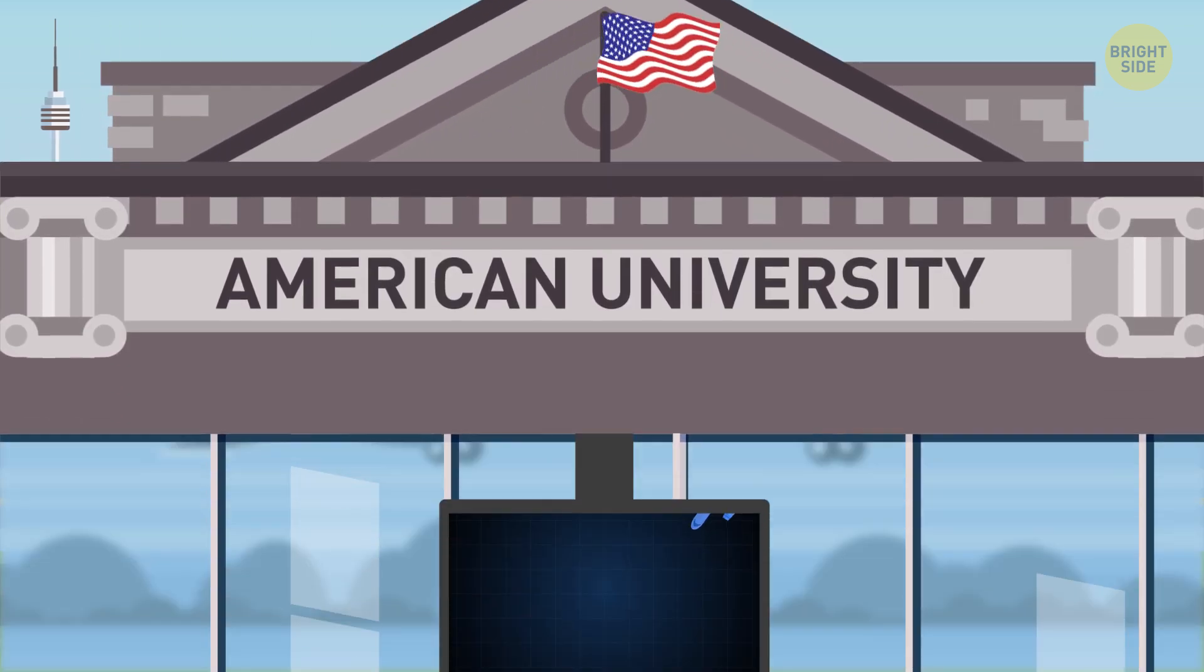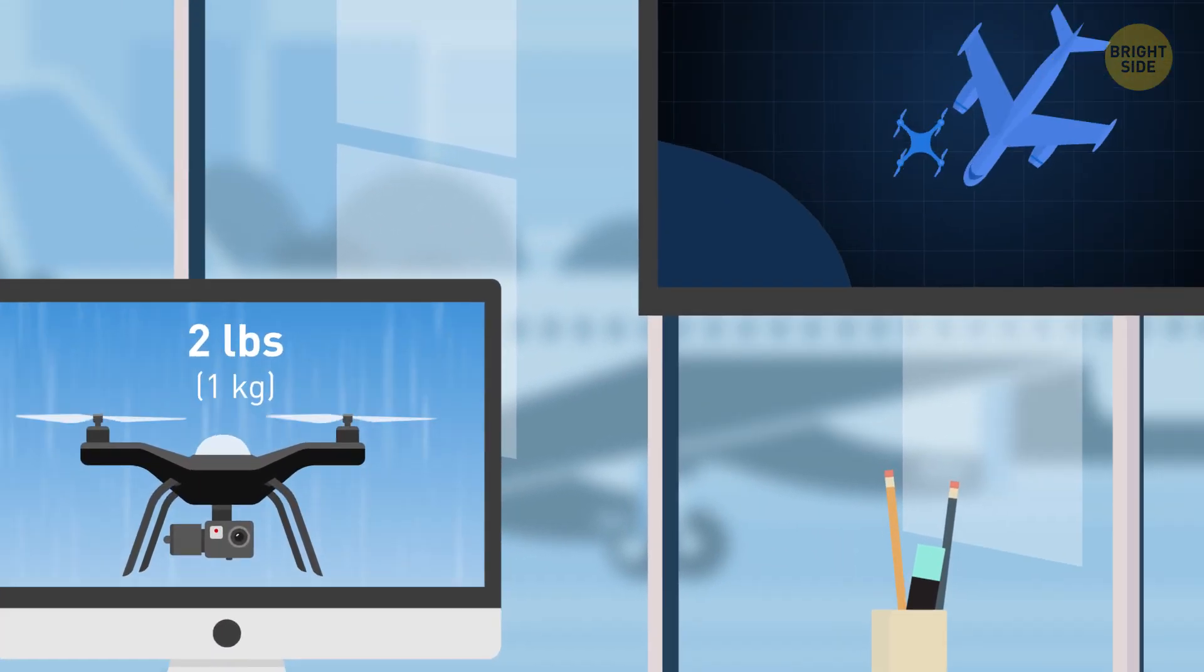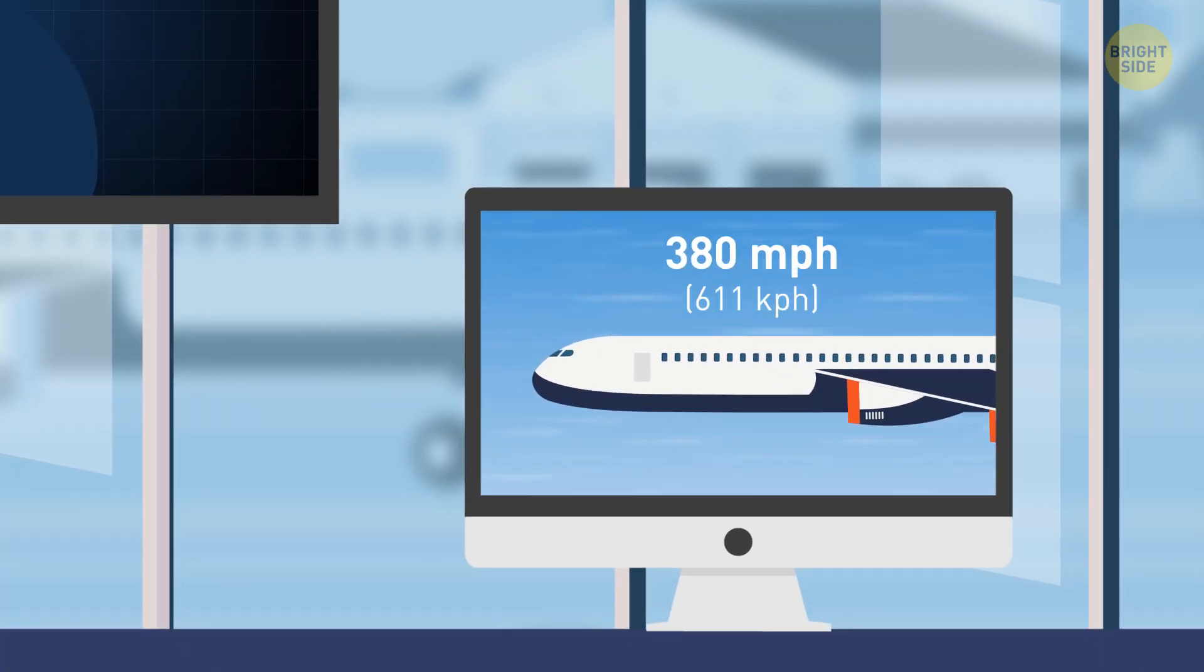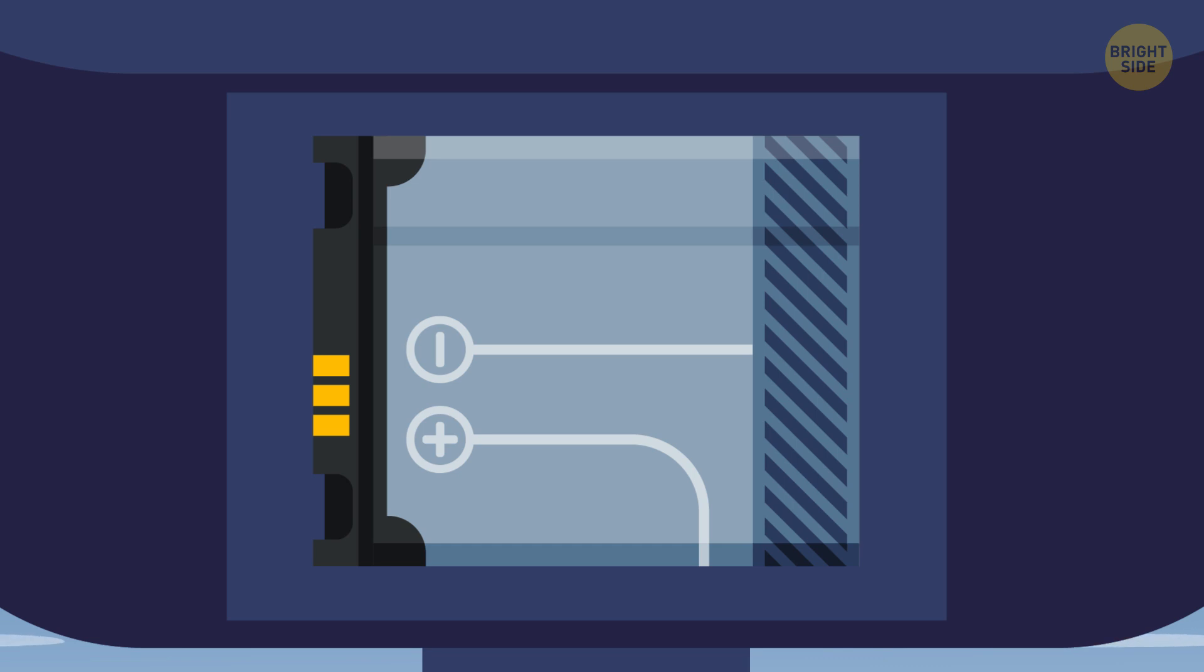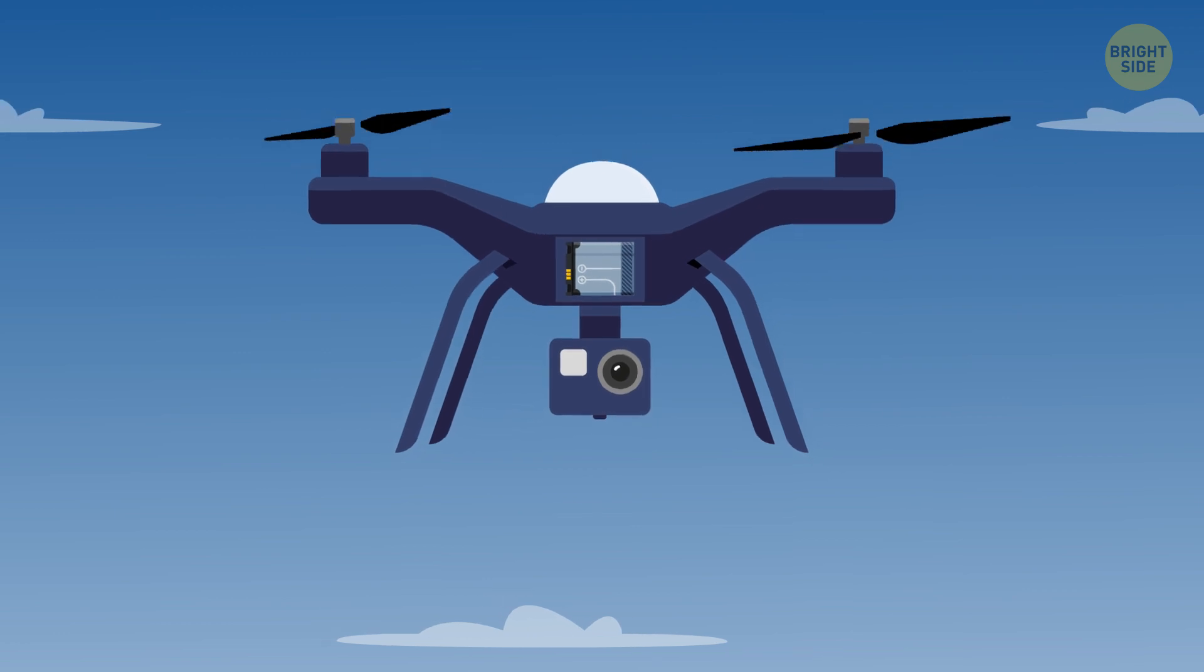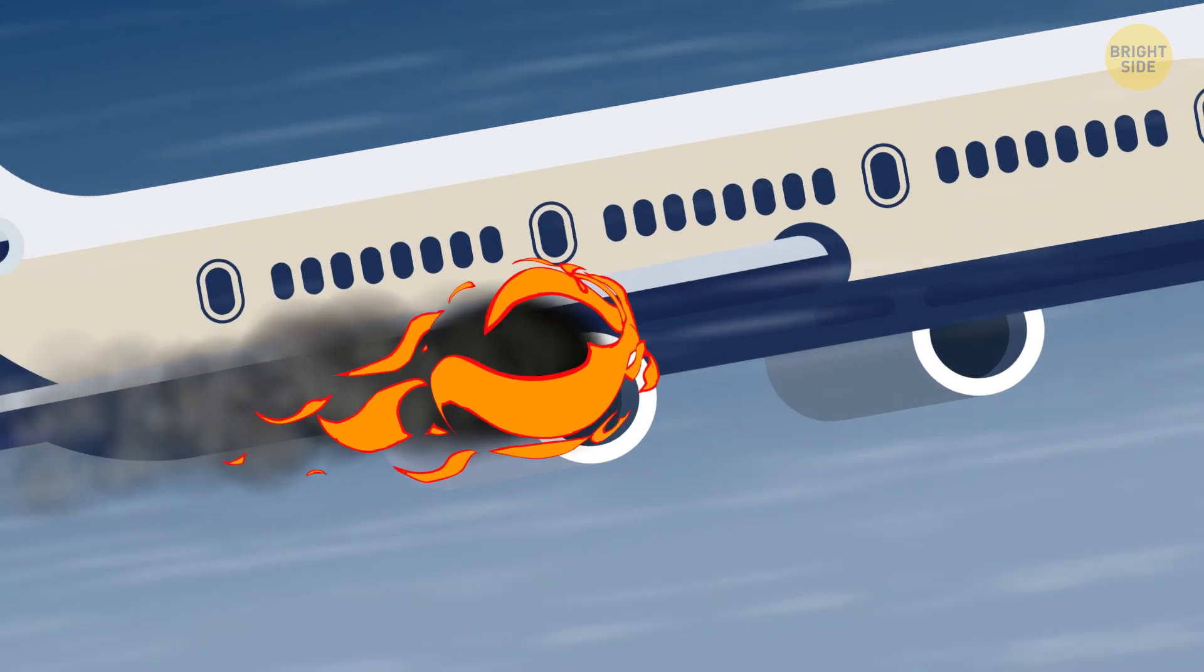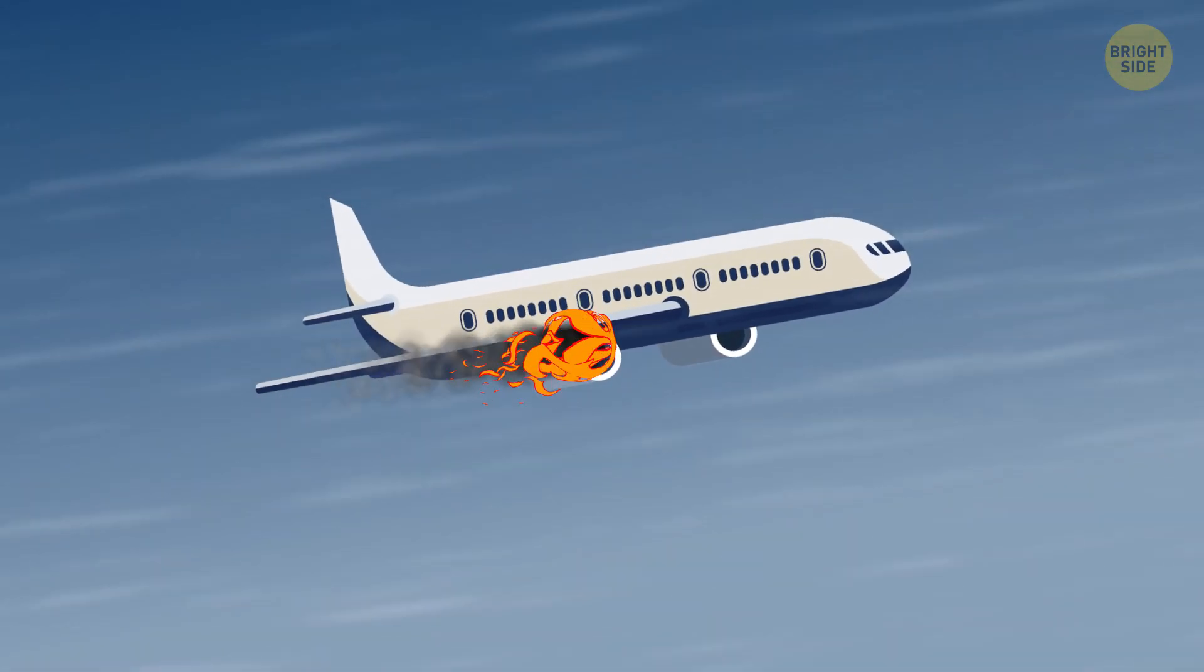Because tests run by an American university have proved that a 2-pound quadcopter can cause severe damage to an airliner that's traveling at a speed of 380 mph. For one thing, drones are powered by lithium-ion batteries. And imagine what would happen if such a battery wasn't broken into pieces during a crash but got lodged in the airframe. In this case, the risk of fire would become terrifyingly real.